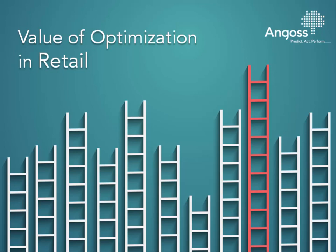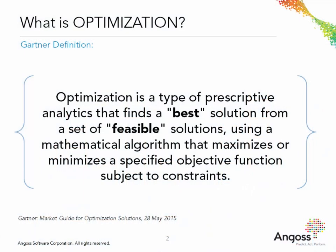Optimization in predictive analytics allows organizations to solve complex business problems to achieve maximum results with minimum resources under real-world constraints. Gartner defines optimization as a type of prescriptive analytics that finds a best solution from a set of feasible solutions using a mathematical algorithm that maximizes or minimizes a specified objective function subject to constraints.